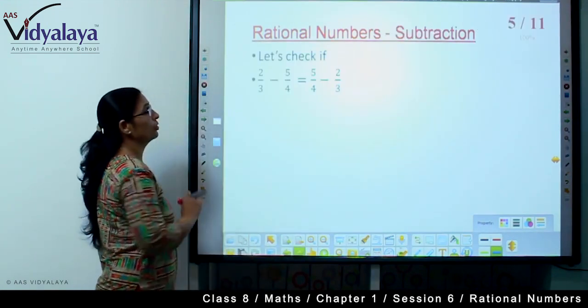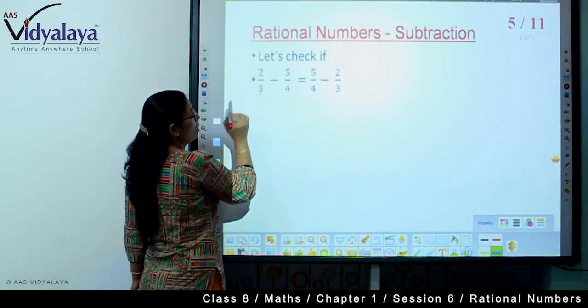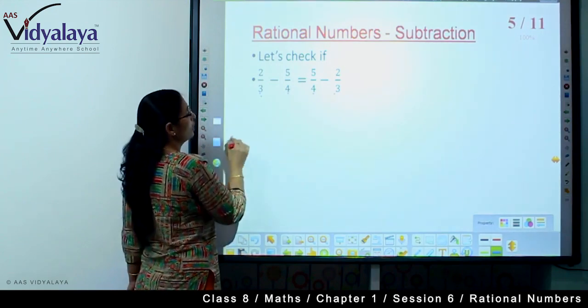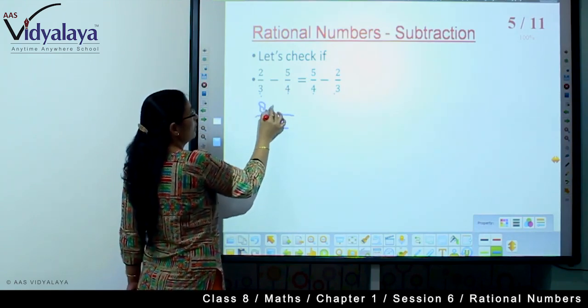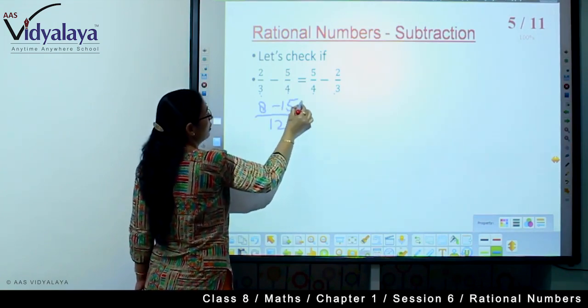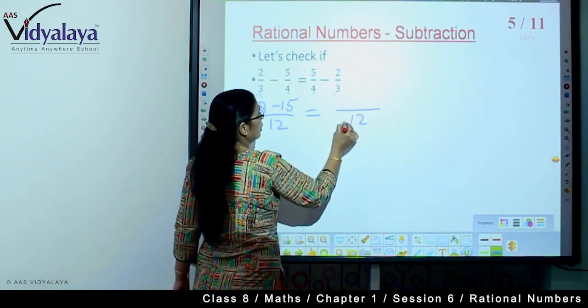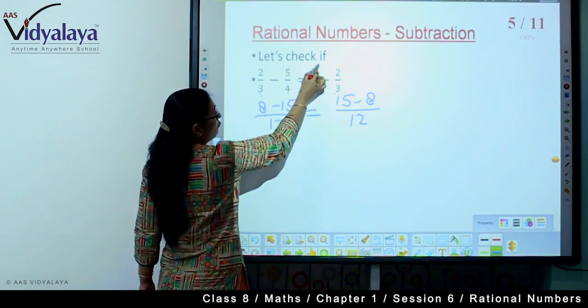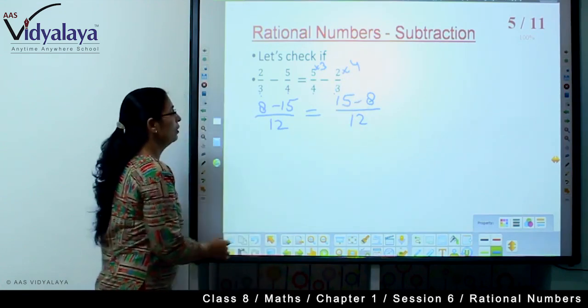Moving to the subtraction part. Let us check if subtraction association works. We have 2 upon 3 minus 5 upon 4. 4 threes are 12, then we multiply 5 by 3, and 2 by 4.